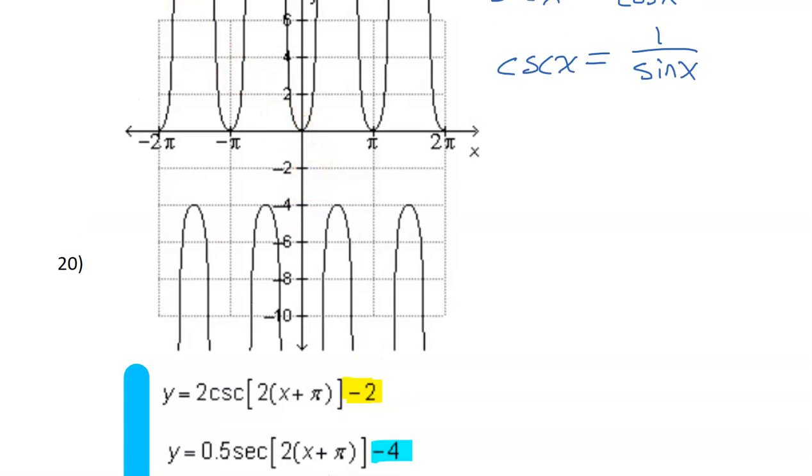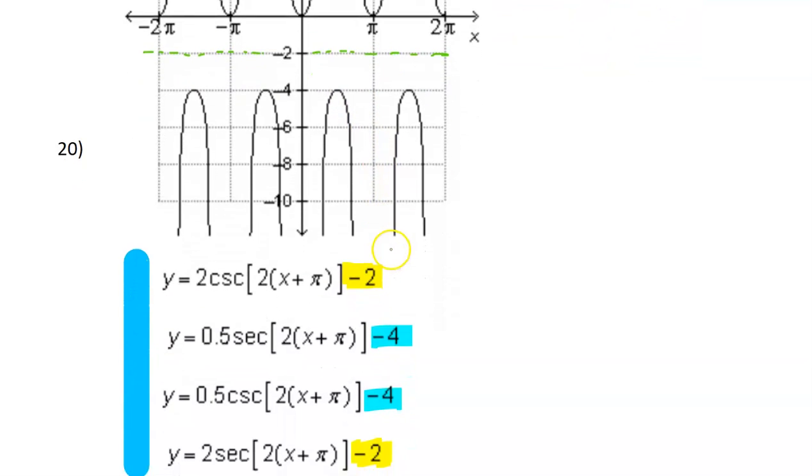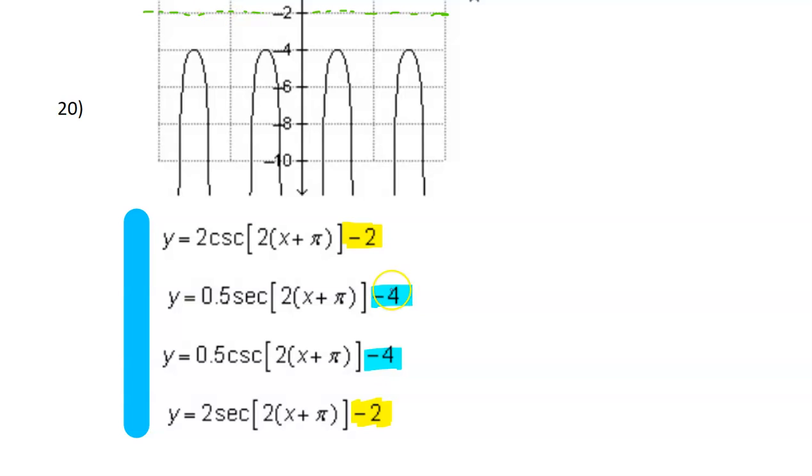So notice if you look at the highs and lows, these peaks and these valleys, right in the middle between them is right here at negative 2. So the midline is negative 2. Therefore, we can eliminate these two possibilities.